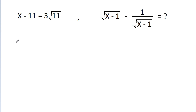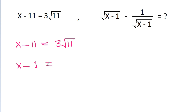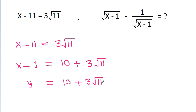We have given that x minus 11 is equal to 3 root 11, and we need x minus 1. If we add 10 to both sides then we get x minus 1 is equal to 10 plus 3 root 11. If we take x minus 1 as y, then y is equal to 10 plus 3 root 11, and we have to find the value of root y minus 1 by root y.